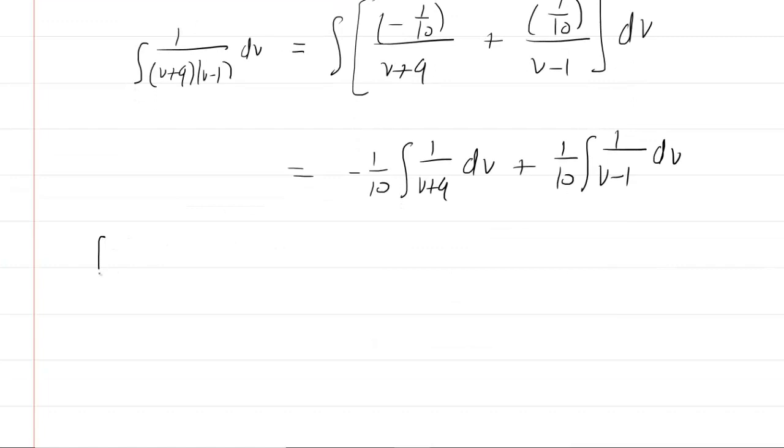Both of these can be evaluated using a u substitution. But there's a bit of a shortcut that you often encounter in these types of problems. And here it is, whenever you have 1 over your variable plus or minus a constant, and you want to integrate that with respect to v. Without going through the u substitution, you'll always end up with the natural log of the absolute value of v plus your constant.